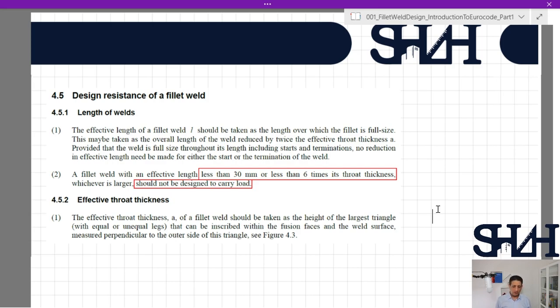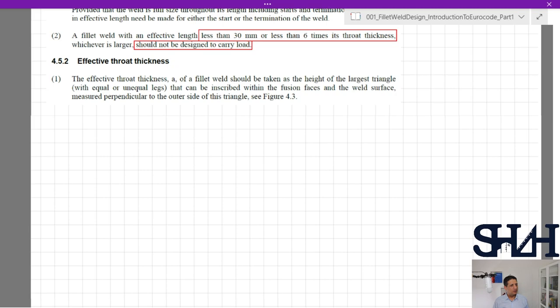Effective throat thickness: The effective throat thickness A of a fillet weld should be taken as the height of the largest triangle with equal or unequal legs that can be inscribed within the fusion faces and the weld surface, measured perpendicular to the outer side of this triangle, provided the figure even in the code.